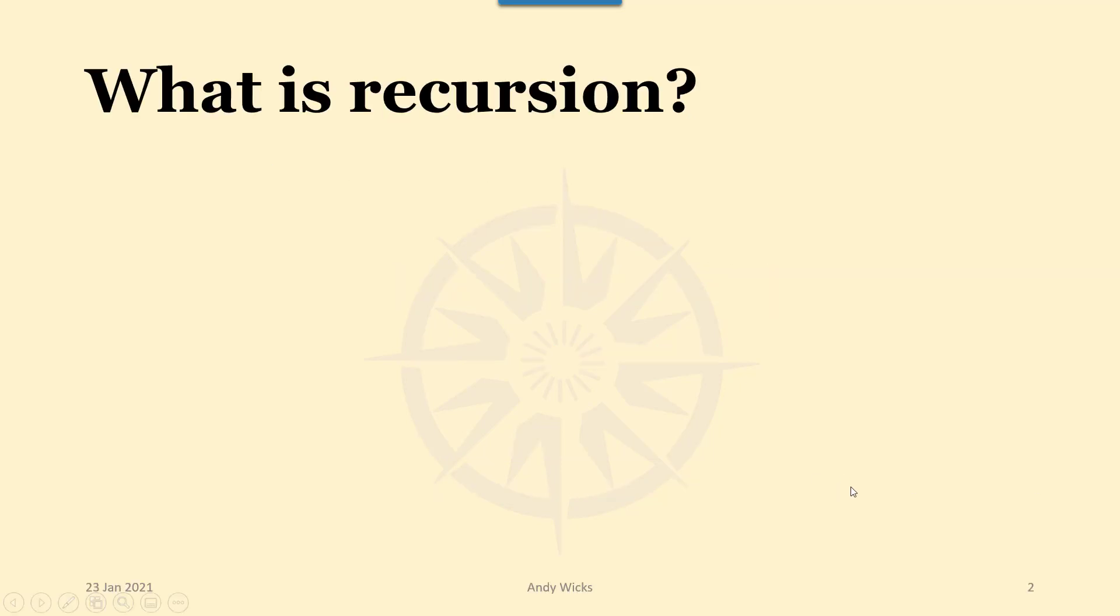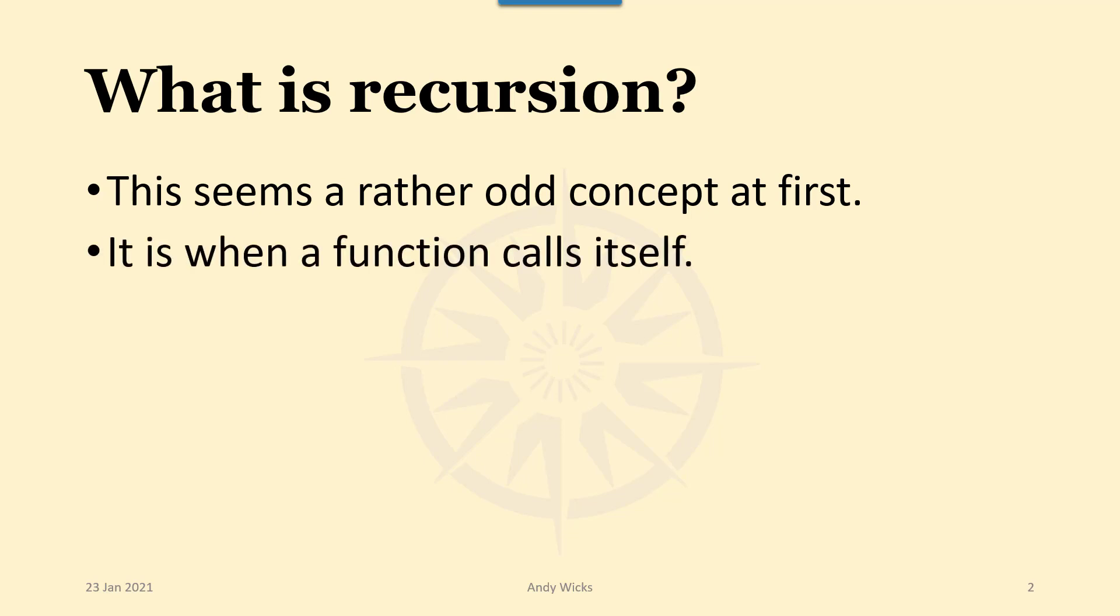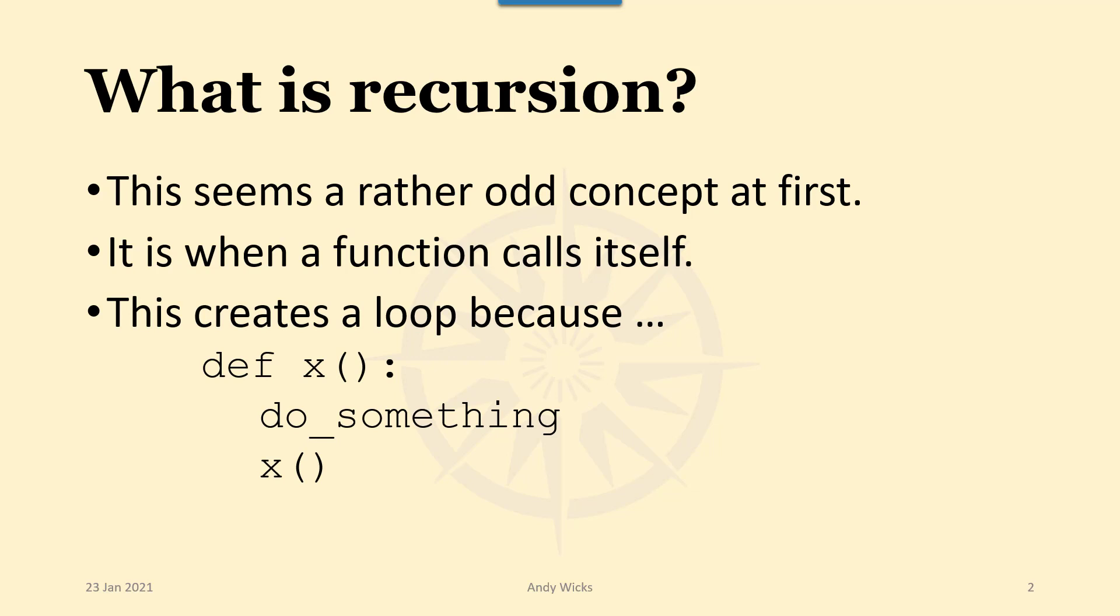The first thing we need to look at is what is recursion? Well, recursion seems a rather odd concept at first. It's when a function calls itself and this creates a loop because if you had something like defining a function called x, it does something and then it calls itself again, it'll keep going round and round that loop.